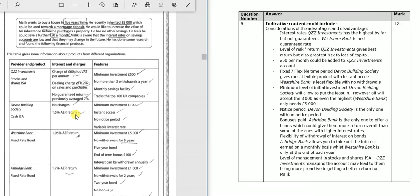Going back up, we can see that Malik wants to make sure that he has sufficient money to use as a mortgage deposit to buy a house. So really, perhaps when it comes to the stocks and shares ISA, he may be a little bit risk averse and not want to take on that sort of level of risk.